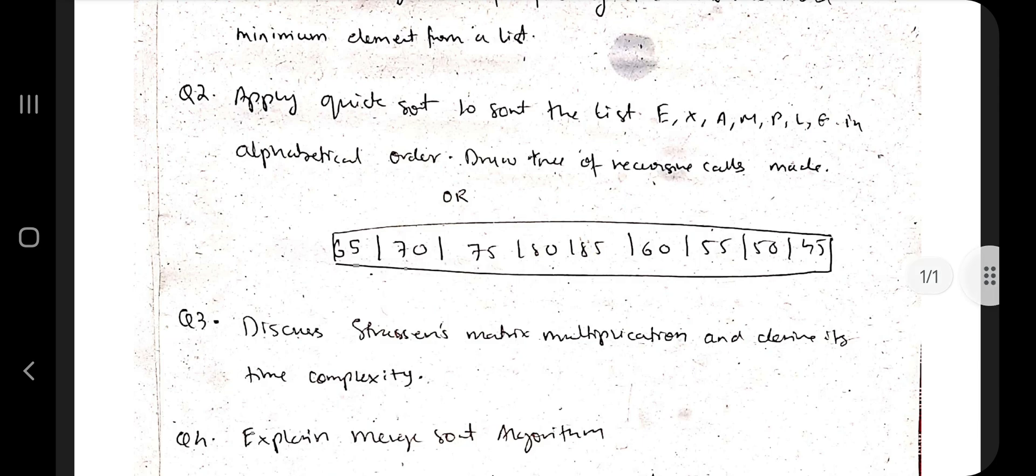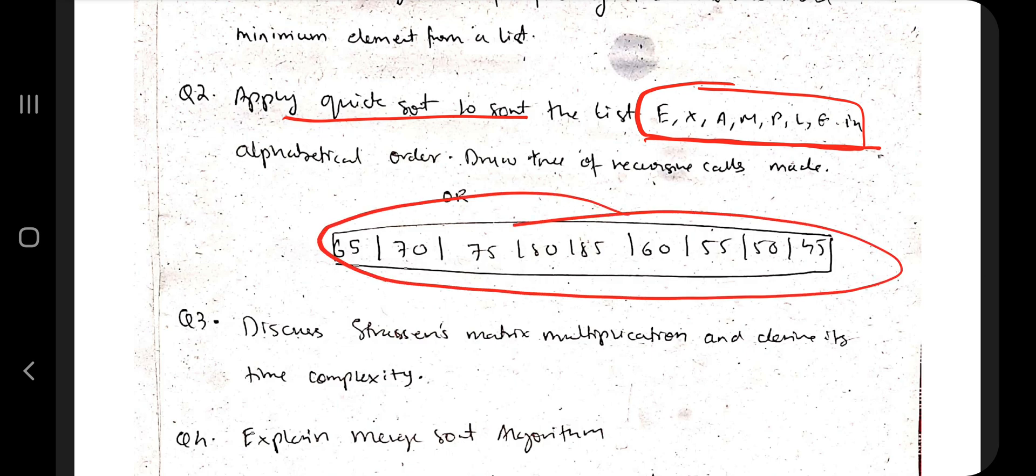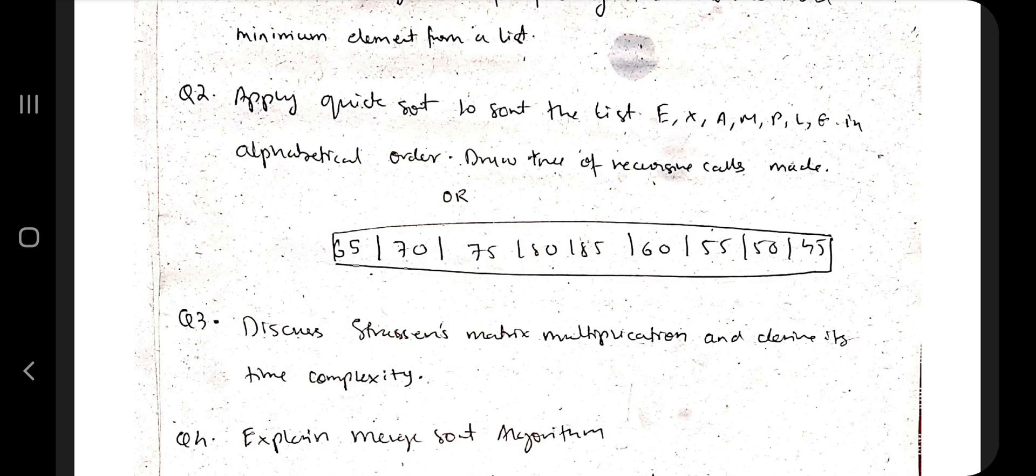Second question: apply quicksort to sort the given list. You need to know what is quicksort, write the algorithm, and explain how it works. For alphabetical order sorting, you can consider these as separate numbers - E as 5, X as 25, A as 1, and so on. You can draw the tree of recursive calls. You have to watch my video for more information.